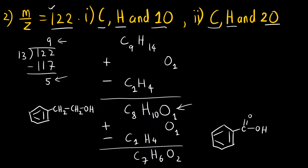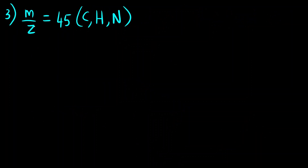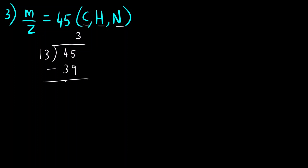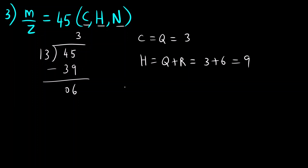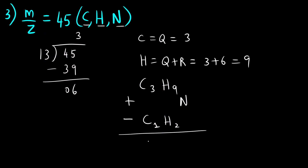So in this way, if I have the m/z value and information about the type of atoms present, I can find out the molecular formula. This is the last question: carbon, hydrogen, and nitrogen. Take 45 divided by 13 — 13 × 3 = 39, remainder is 6. Number of carbons equals quotient = 3. Number of hydrogens equals 3 + 6 = 9. Now we add nitrogen and subtract CH2 (since 12 + 2 = 14). So the molecular formula is C3−1 = C2, H9−2 = H7, N1, giving C2H7N.